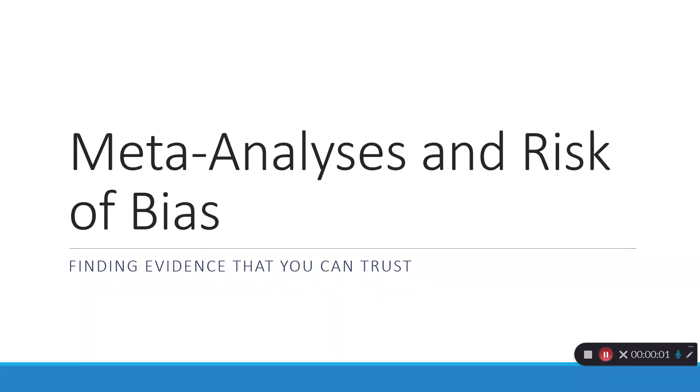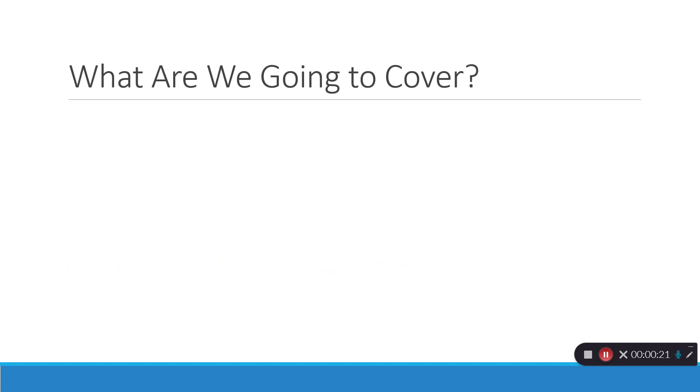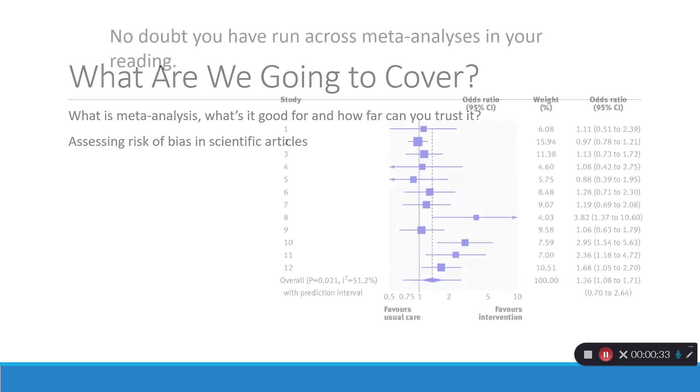I'm going to go quickly over meta-analysis and more specifically with emphasis on risk of bias. Really the focus of this is on how do we evaluate or find evidence that we can trust. So what are we going to cover here? First I'm going to talk just a minute about meta-analysis, what it's good for and how far you can trust it. Then I'm going to go over assessing risk of bias in scientific articles.